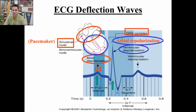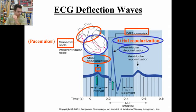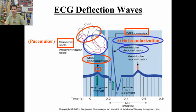Hidden behind ventricular depolarization — behind the QRS — is atrial repolarization. You can't see the atrial repolarization wave because the ventricular depolarization is masking it, overriding it. And then lastly, we have ventricular repolarization, which is the T wave.